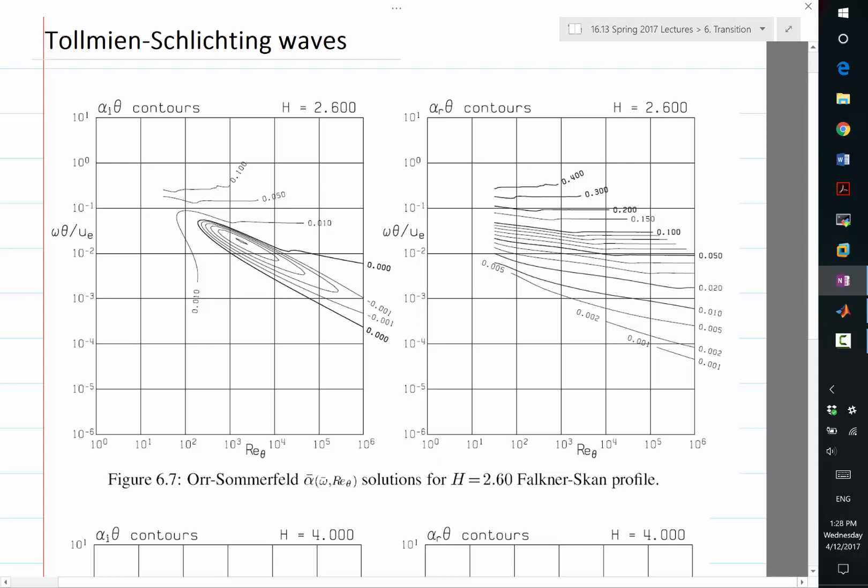The Orr-Sommerfeld equation is parameterized by three non-dimensional parameters. One is Re_theta, the viscosity non-dimensionalized by the local length scales of the boundary layer. The second is the frequency, the temporal frequency of this oscillation. Different oscillations that oscillate at different frequencies in time decay or grow at different rates.